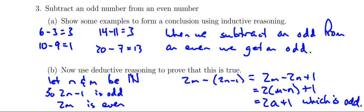And so we've been able to prove that when you subtract an odd from an even, the number that you're going to get is going to have the form of an odd.